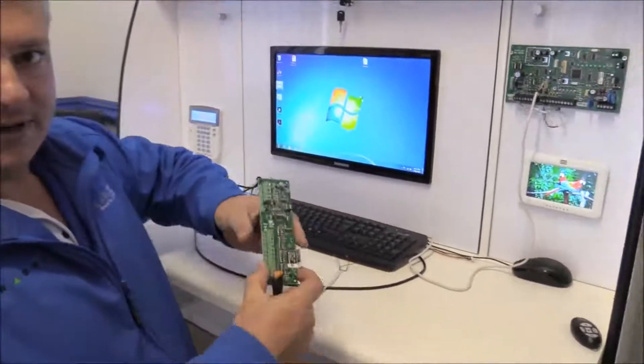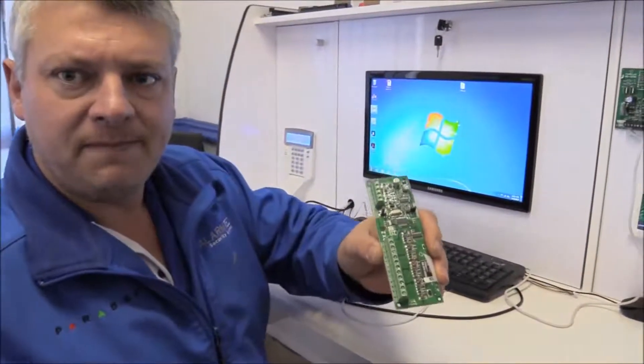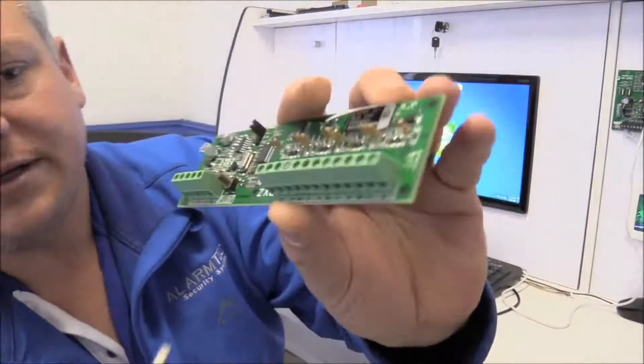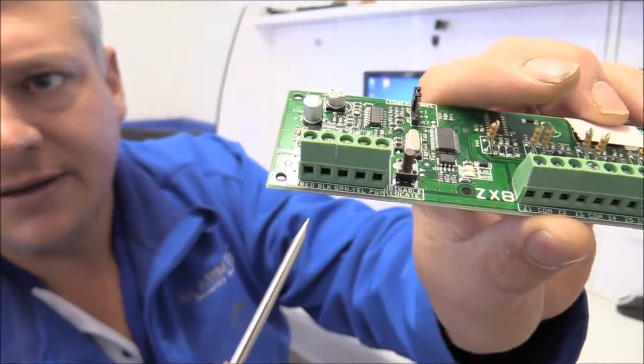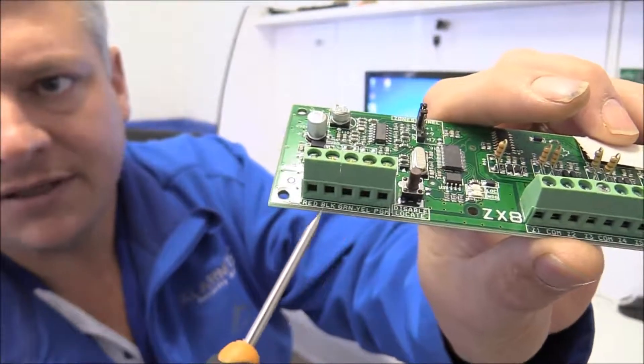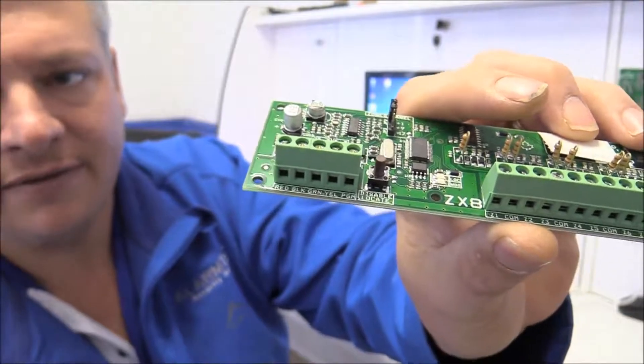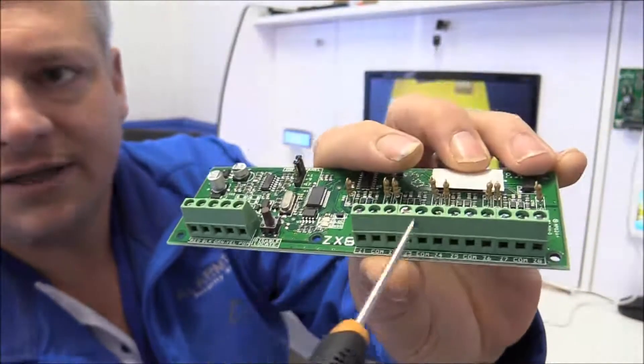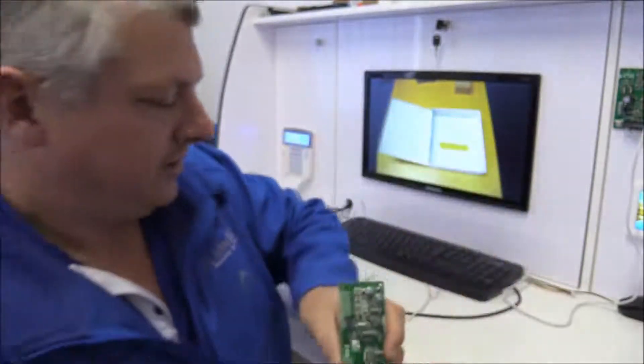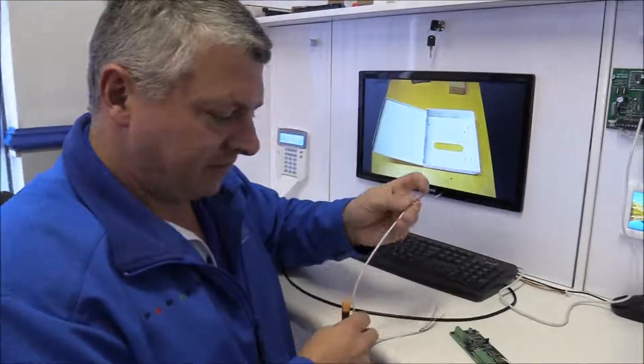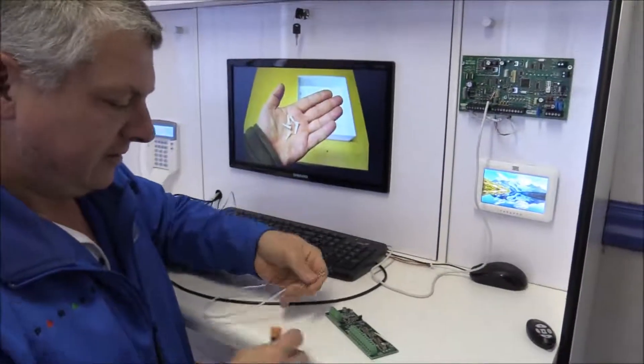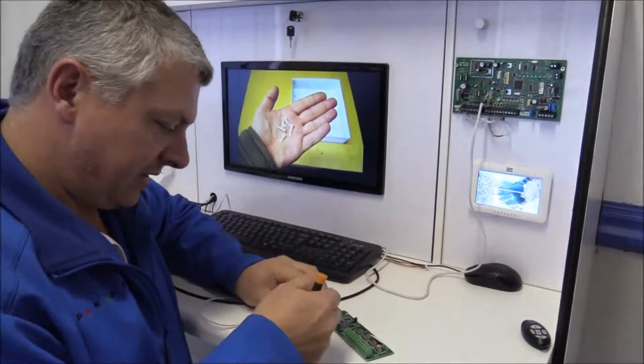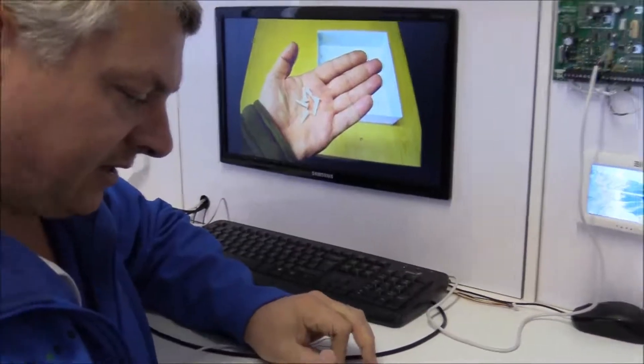Let's start with the ZX8 expansion module. On the connections, here's your keypad connections that you'll need to connect to the control panel. On the other side is your zone input. So, a small piece of wire. Let's connect the red, black, green and yellow.